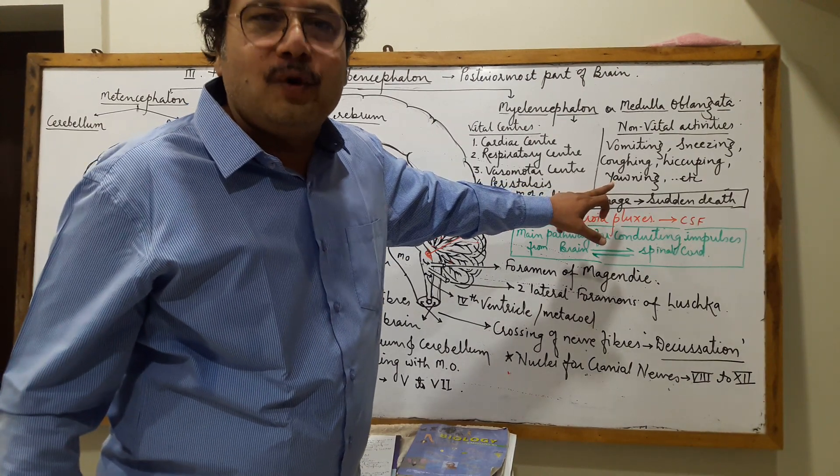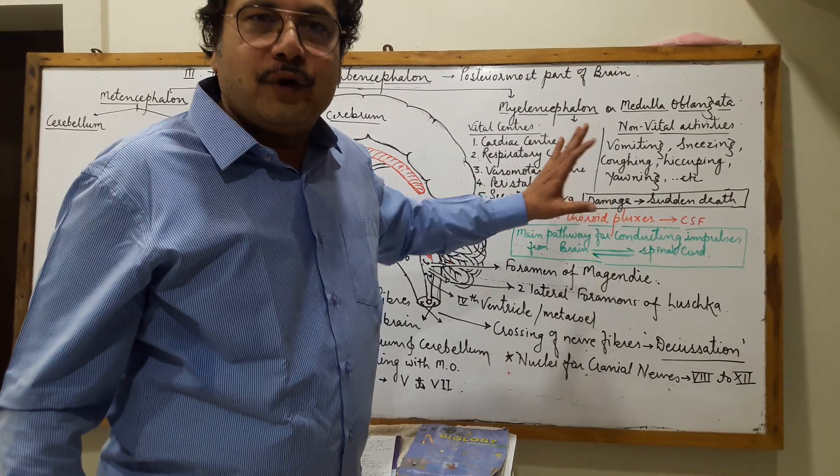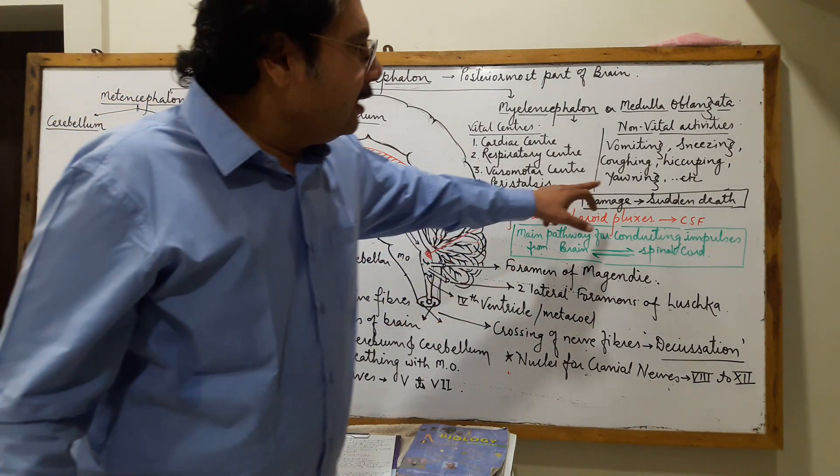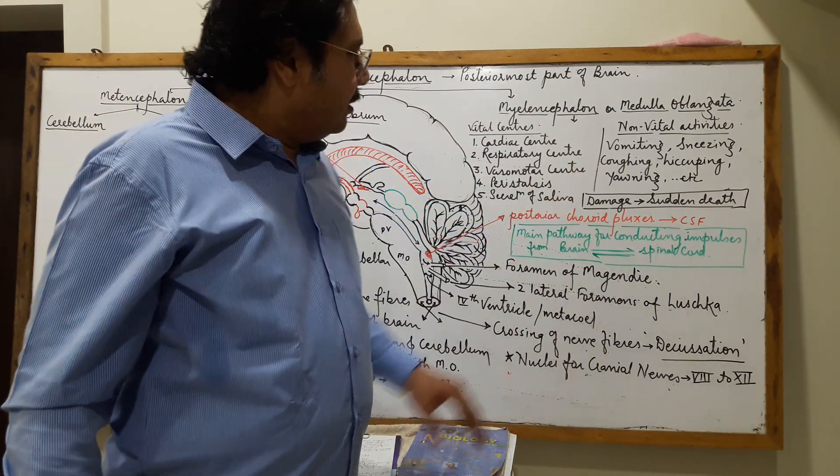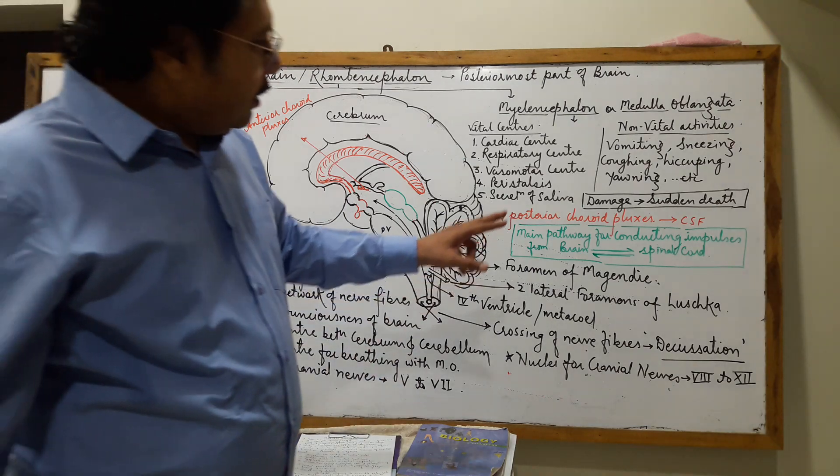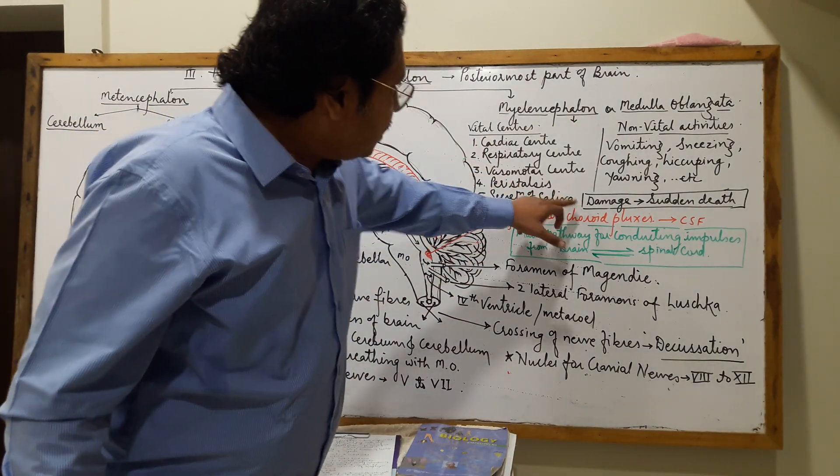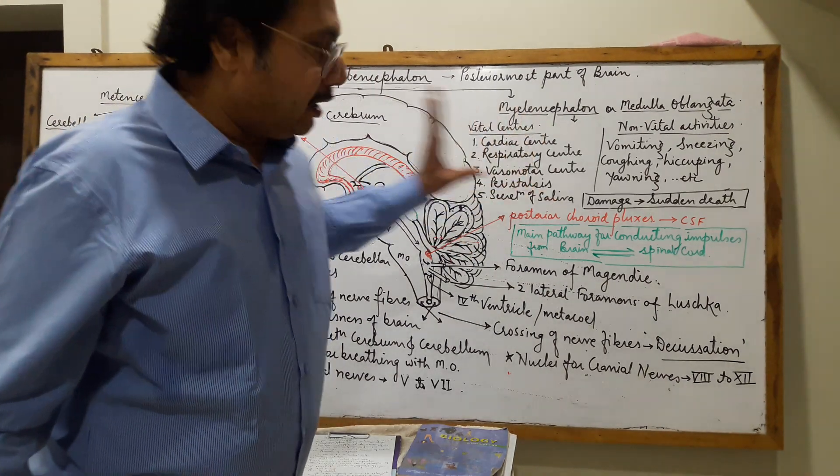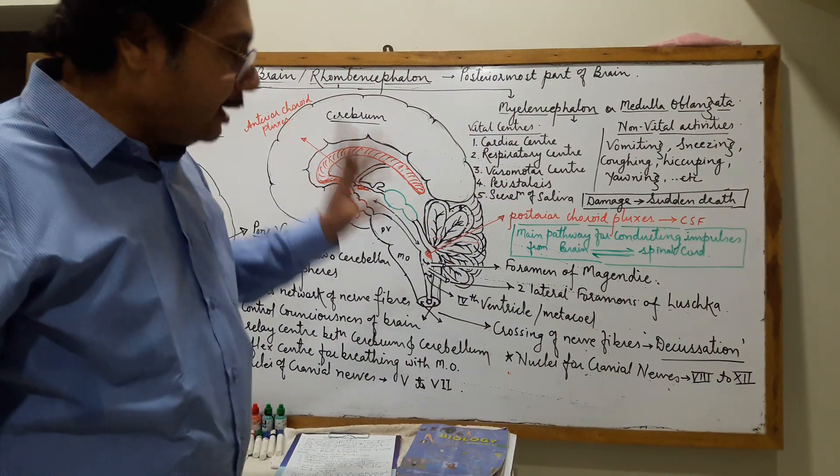Yawning is because of deficiency of oxygen. Whenever there is less supply of oxygen to the medulla oblongata or the brain, yawning activity occurs. Damage to the medulla oblongata blocks such vital centers, causing sudden death.